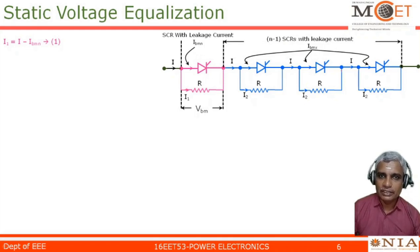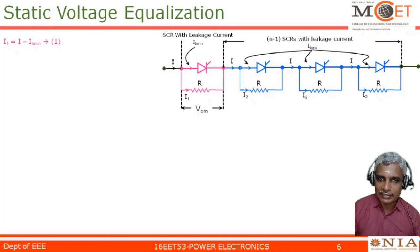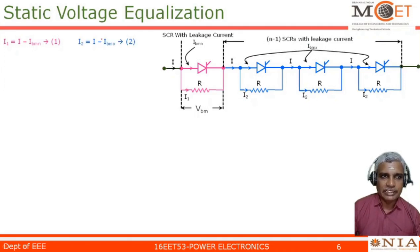So this is the problem under consideration: in the total string, one SCR has a different leakage current IBMN, whereas the remaining n minus 1 SCRs have the same leakage current IBMX. Applying KCL at this node: I equals IBMX plus I2, or I2 equals I minus IBMX. Let this be equation 2.